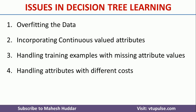The next issue in decision tree is handling attributes with different costs. Whenever we apply the core decision tree algorithm, each and every attribute in the given problem is given equal importance. Like if you have four attributes, all four attributes are given equal importance. But sometimes, given a problem definition, there is a possibility that a particular attribute may have more importance or is given more weightage. In such a case, we cannot use the core decision tree learning.